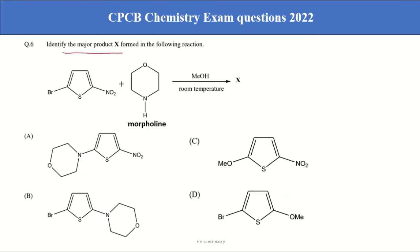Identify the major product X formed in the following reaction. This is nucleophilic substitution reaction. So this morpholine attacks here. So this bond pair comes here. Then this comes here. Here N double bond O, bond O becomes O minus.